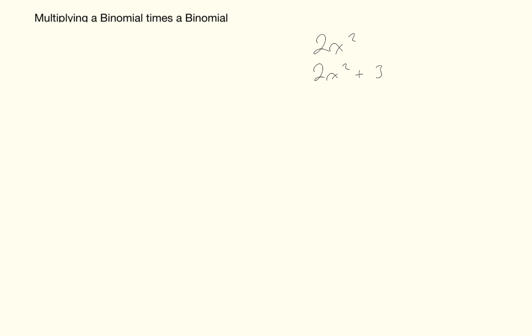We're going to be talking about multiplying a binomial times a binomial. A binomial is an expression — an expression is one or more terms. For example, 2x squared is one term; 2x squared plus 3x has two terms, making it a binomial. One term is a monomial, two terms is a binomial, three terms is a trinomial, and together they're all called polynomials.